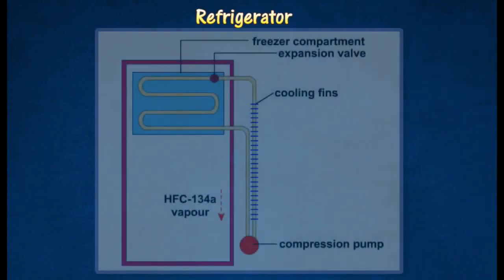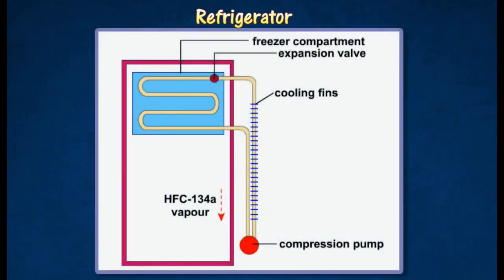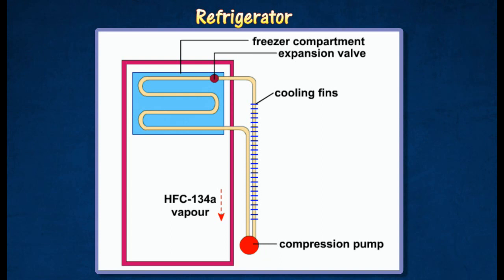A refrigerator is cooled by the process of evaporation. A volatile liquid called hydrofluorocarbon is circulated in coiled pipes around the freezer compartment of the refrigerator and evaporates as it passes through the expansion valve. The latent heat absorbed as the liquid evaporates cools the coiled pipe around the freezer compartment. A pump then removes the vapor and forces it into a heat exchanger.